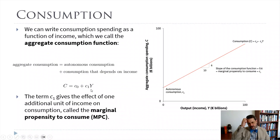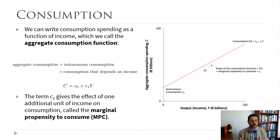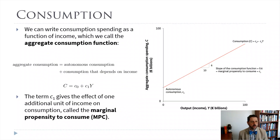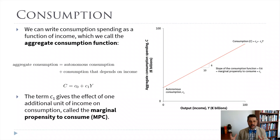Our C1 here is going to be really important — we call it our marginal propensity to consume. It means the amount of extra that you spend for every extra dollar of income. We're going to assume it's somewhere between zero and one, so it's some fraction of that extra dollar — maybe 0.5, 0.6, or 0.8. In the real world, it's going to vary by person: some people will save more, some people will spend more. Lower-income people tend to have a higher marginal propensity to consume than richer people.